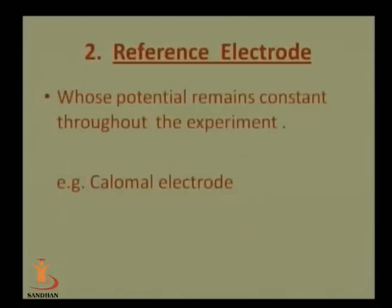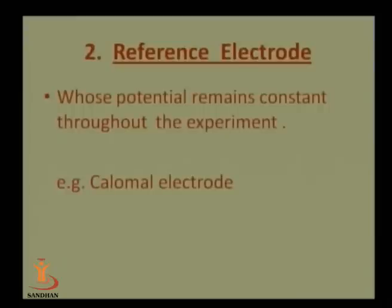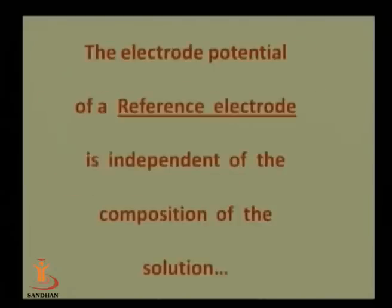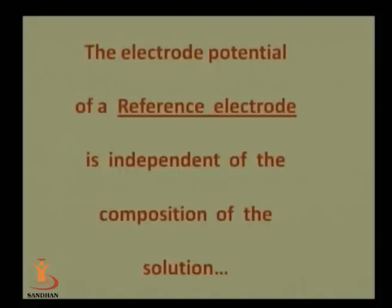The second type is the reference electrode, whose potential remains constant throughout the experiment. It has a particular constant potential. The most commonly used reference electrode is the normal calomel electrode. The electrode potential of a reference electrode is independent of the composition of the solution. Whatever solution we use in potentiometric titration, it does not affect the reference electrode.